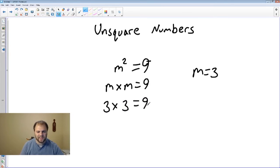Thus we can say that the square root of 9 is M. Square root of 9 is 3.